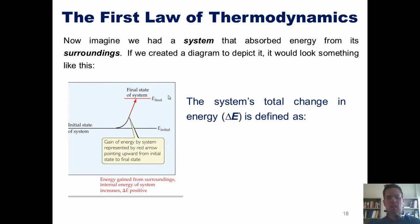Thus, we can say that the system's total change in energy, or delta E, can be defined as E final minus E initial. This turns out to be the case in either scenario, that in which the system gives off energy to its surroundings, or the surroundings give energy to the system.